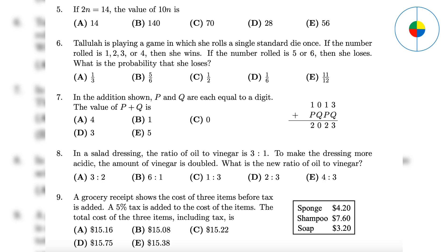Question 6: This is simple probability. Two losses over six possibilities; the answer is A. Question 7: Q can only be 0 and P can only be 1, so the answer is 1.